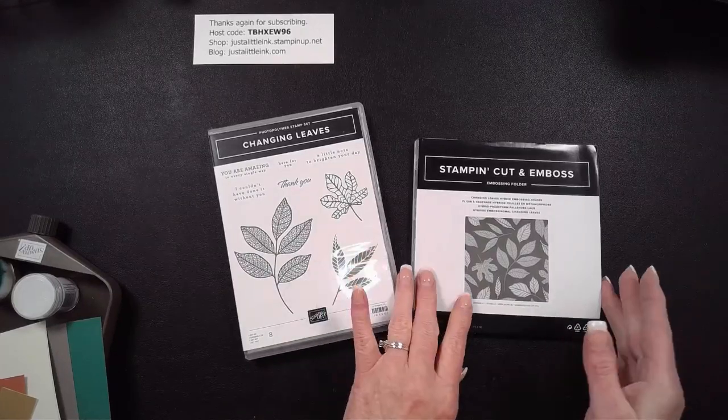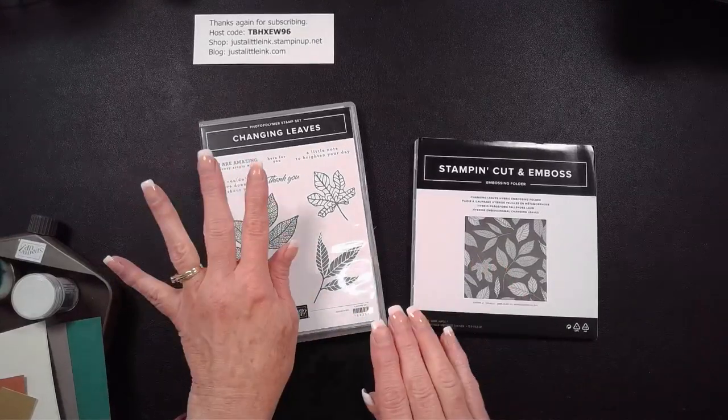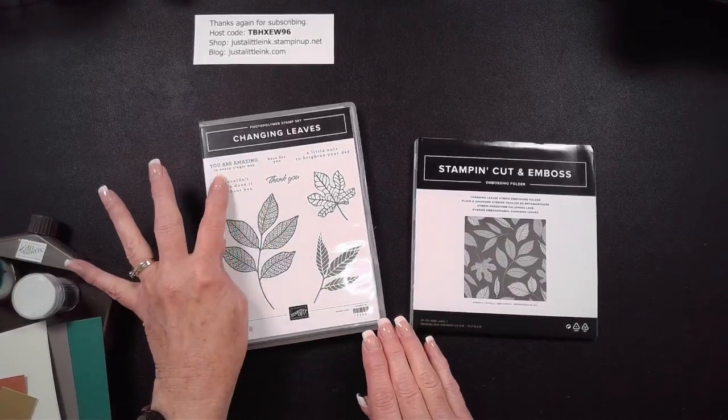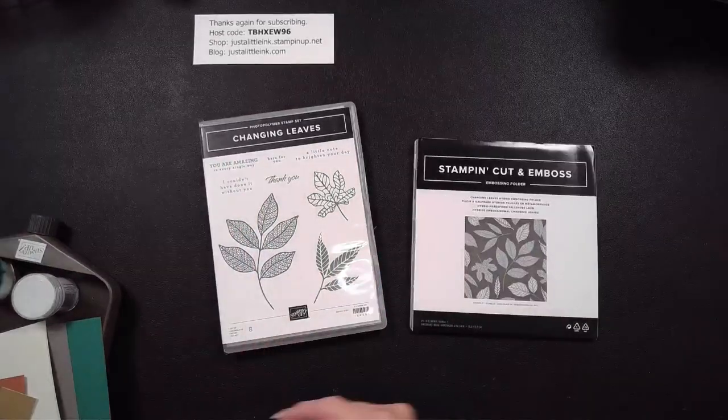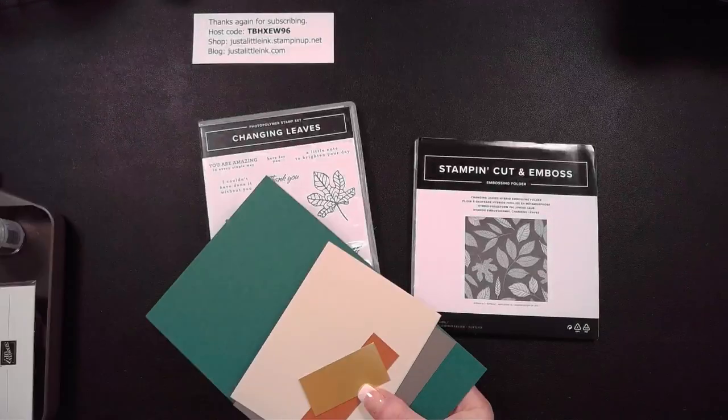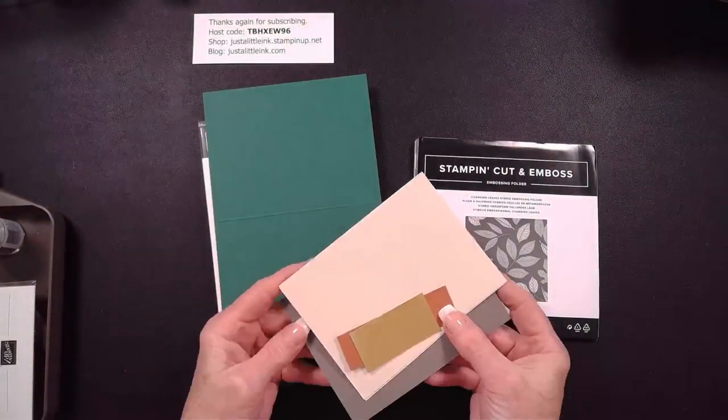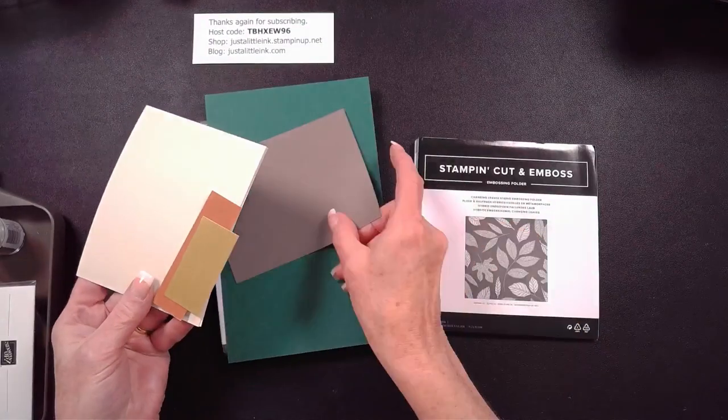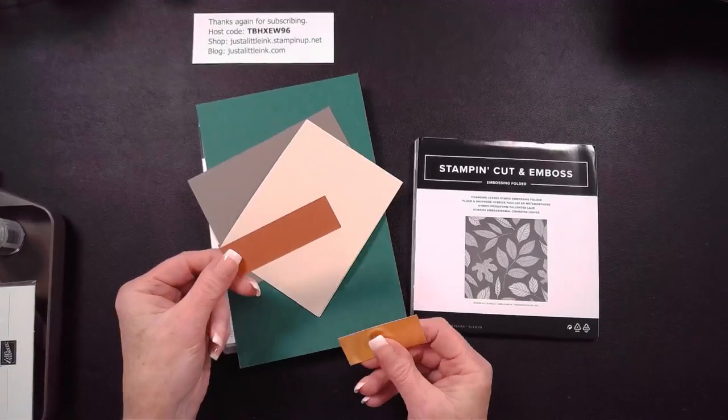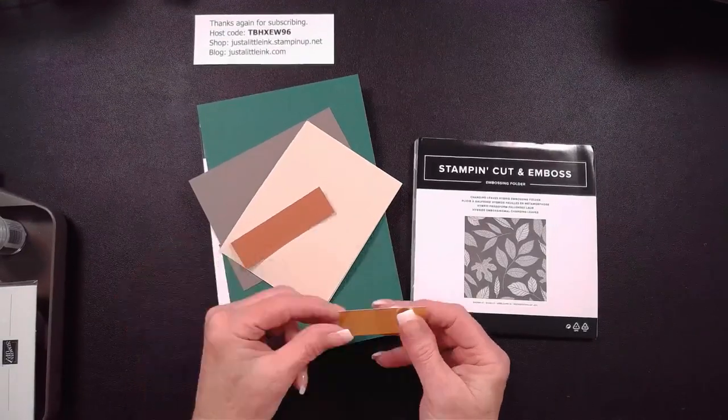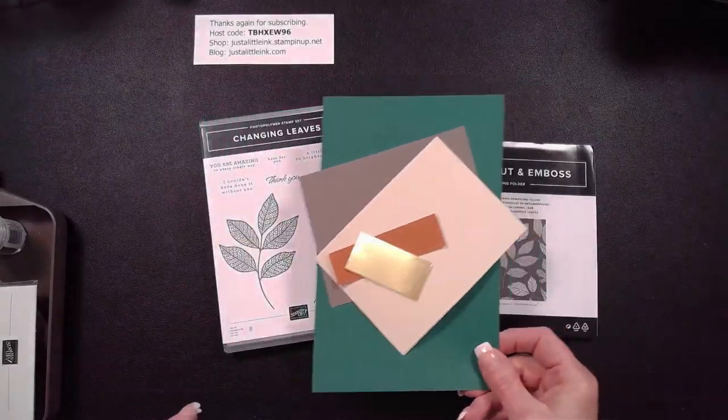This is using a hybrid embossing folder. I'm using the greetings from the stamp set, this is Changing Leaves, and I'm using the embossing folder. I'm also going to be using some Shaded Spruce cardstock, some Pebbled Path cardstock, some Basic Beige cardstock, some Copper Clay cardstock, and some Gold Foil cardstock. I wrote down all my measurements and then left them in the other room, so we're going to be doing this without.